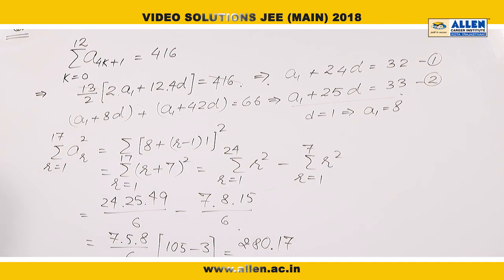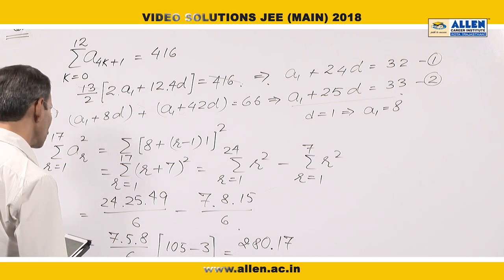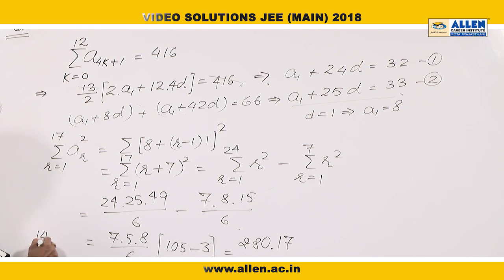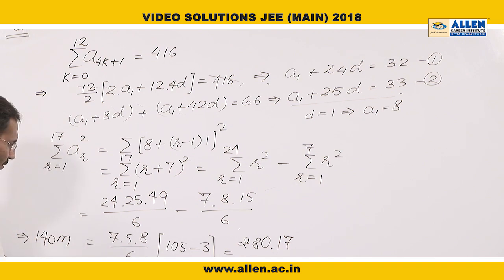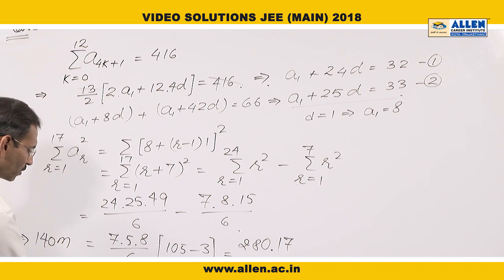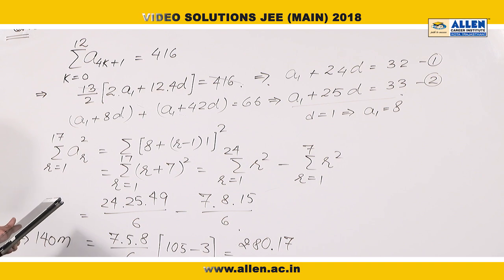This equals, they are saying, 140m. So if it equals 140m, by comparing we can find the value of m as 34.